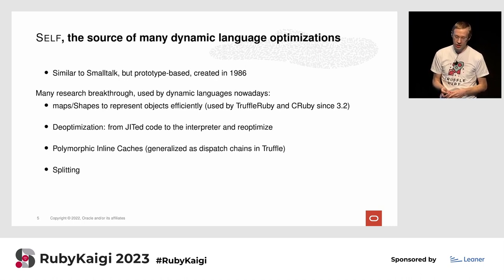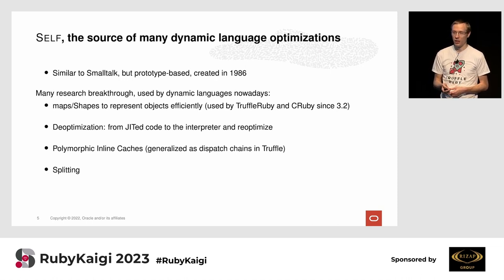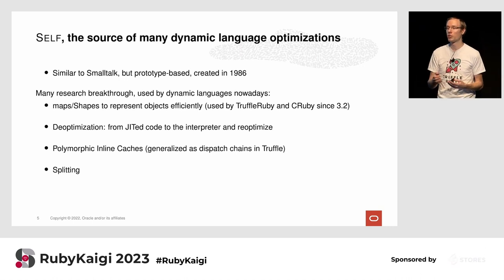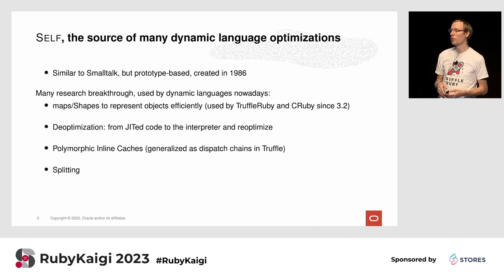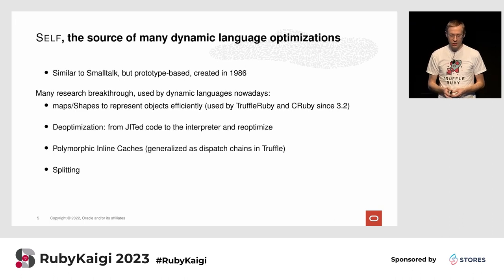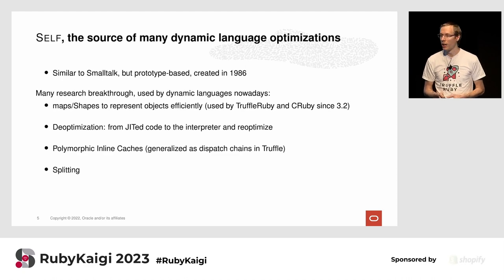Here I will give four examples. One is maps or shapes, a better way to represent objects — used in TruffleRuby since the beginning and in CRuby since 3.2. They also invented de-optimization, the reverse of just-in-time compilation: going from machine code back to the interpreter, for instance to support debugging. They invented polymorphic inline caches, which I'll explain later, and also splitting.